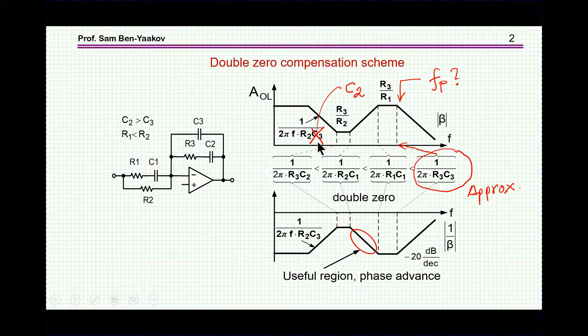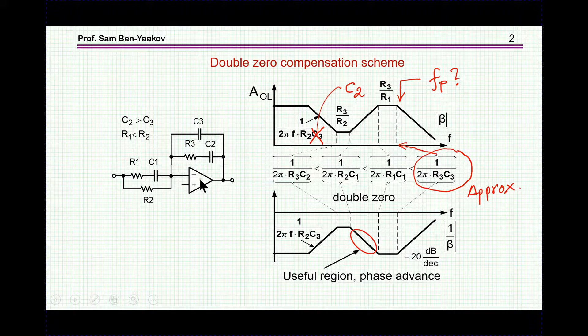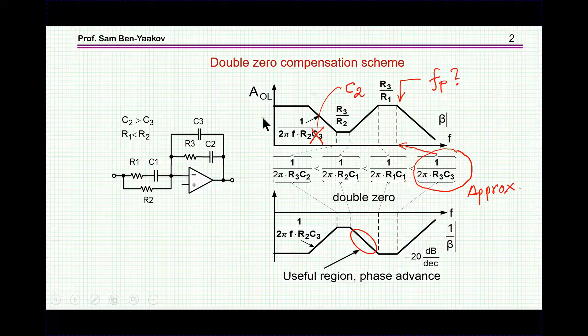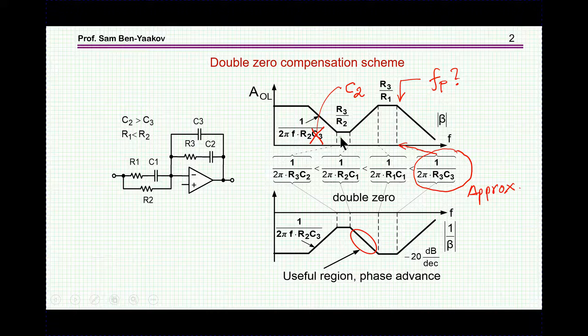The motivation for this presentation is this circuit here, which is a network built around an operational amplifier for realizing a compensator for a power conversion system. In particular, we are interested in this region here. This is like a PID, you might say, it's a double zero, and we have here a phase advance that is used to compensate some of the phase lag of a typical power conversion system.